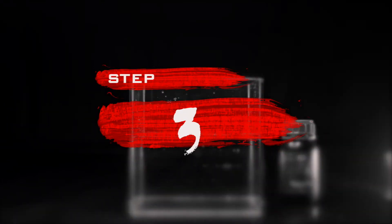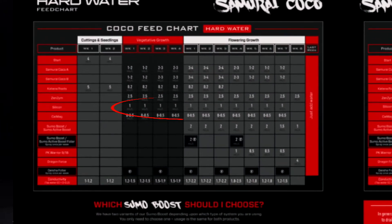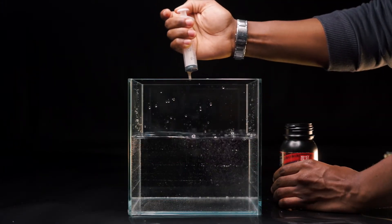Step 3: You want to measure out the suggested dosage rate on your feed chart. In our case we needed 4 milliliters of Shogun silicon for 4 liters of water.